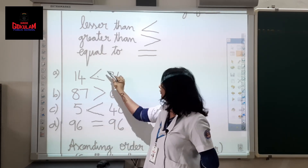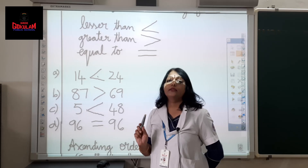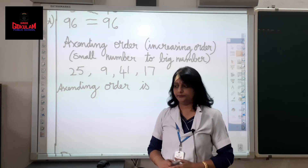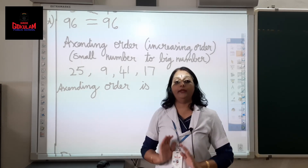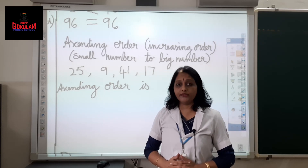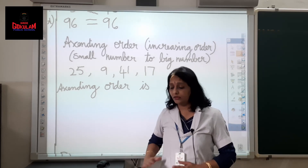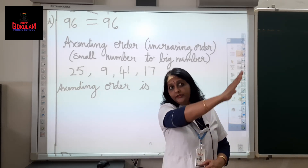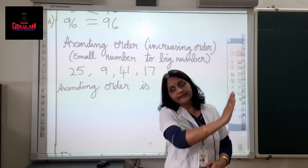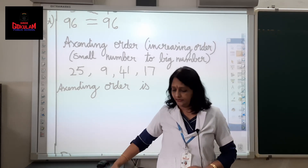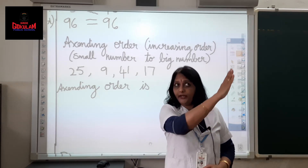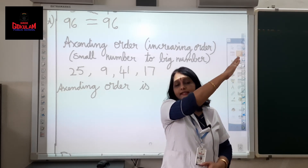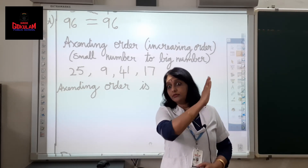Just remember: the open end always faces the greater number. Let us discuss about ascending and descending order. You are all familiar with an aeroplane. Have you seen aeroplanes taking off? The distance from the ground increases — the aeroplane ascends. Ascending order means small to big number.